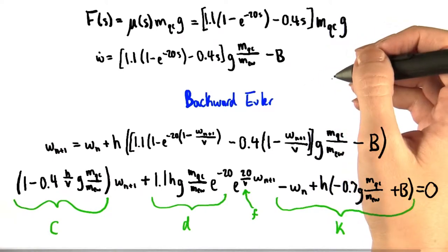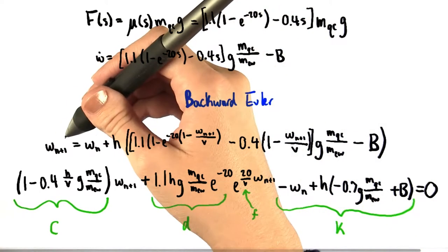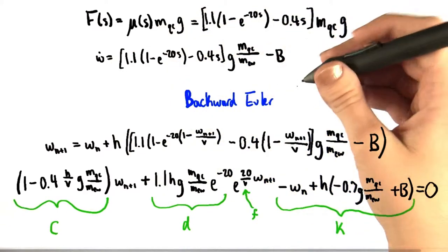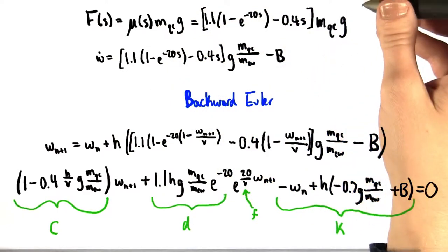In order to use the backward Euler method to come up with an expression for w at the n+1 step, we know that we're going to need an expression for w dot. So that's the first thing we deal with.